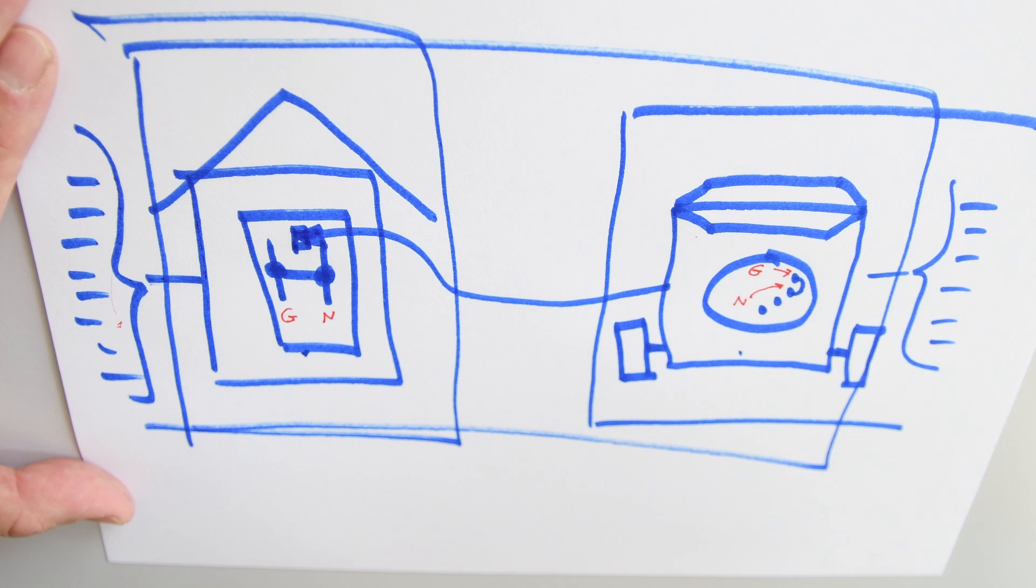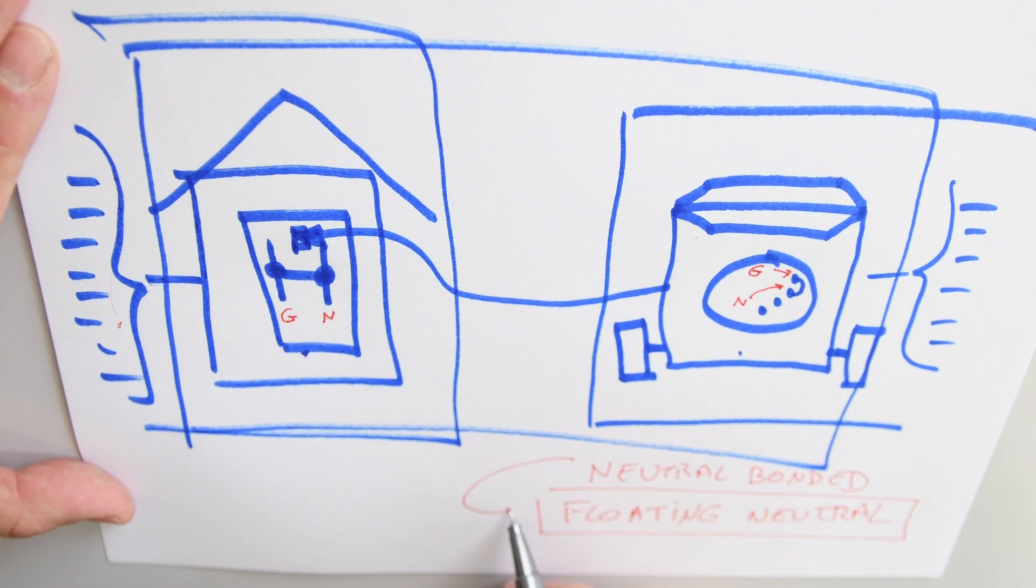By doing so, we'll turn what is called a neutral bonded generator, which is the way they come for the most part when you buy new, and we'll convert it to a floating neutral. So this is the conversion we're going to do next.